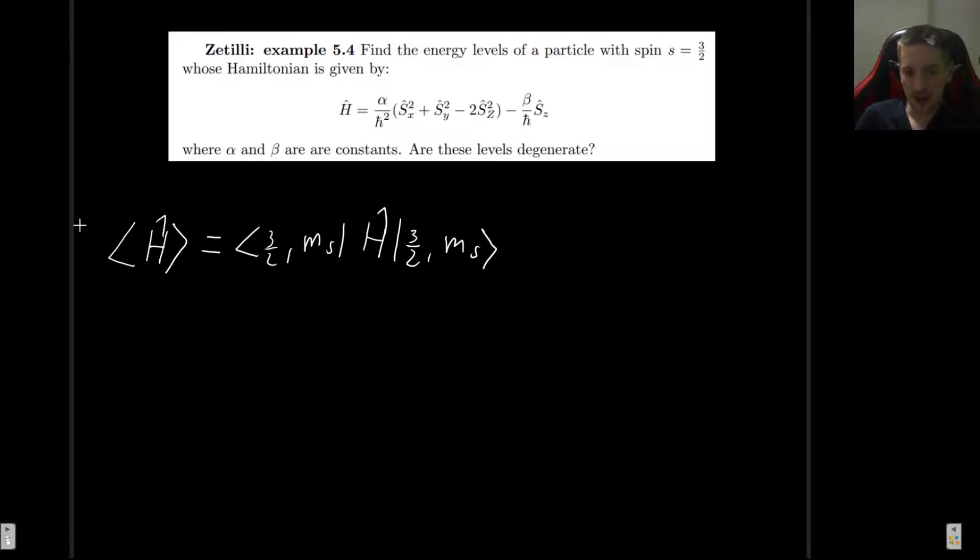But what about m_s? Well, m_s can take quite a few different values. It can go from -3/2 to 3/2 in integer steps. So it can be -3/2, -1/2, 1/2, or 3/2. So there are many different values of m. And that's why we have energy levels. There are different possible values for the energy and they depend on the angular number m_s. So we're going to do this in the general case. Now let's do exactly this.